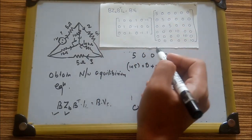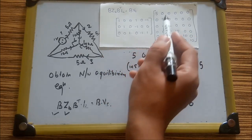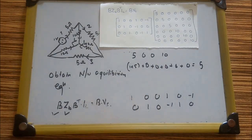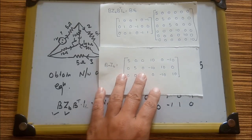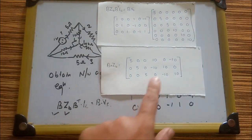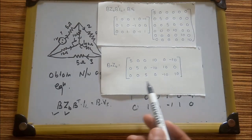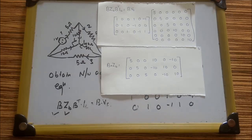Computing all entries of B·ZB, the result is: Row 1: [5, 0, 0, 10, 0, -10]; Row 2: [0, 5, 0, -10, 10, 0]; Row 3: [0, 0, 5, 0, -10, 10]. This is the B·ZB matrix.